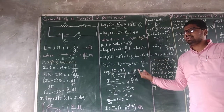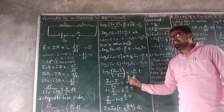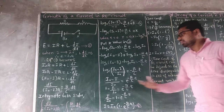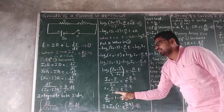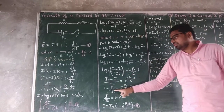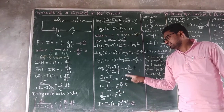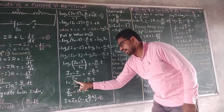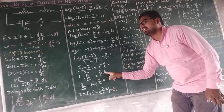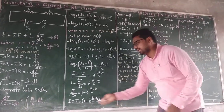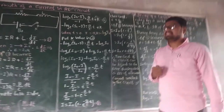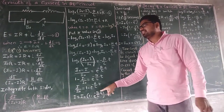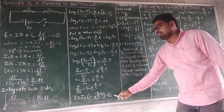Removing the log by taking the exponential: (I₀ - I)/I₀ = e^(-Rt/L). Rewriting the left-hand side: 1 - I/I₀ = e^(-Rt/L). Rearranging: I/I₀ = 1 - e^(-Rt/L). Therefore the growth equation is I = I₀(1 - e^(-Rt/L)). This is equation number 3.